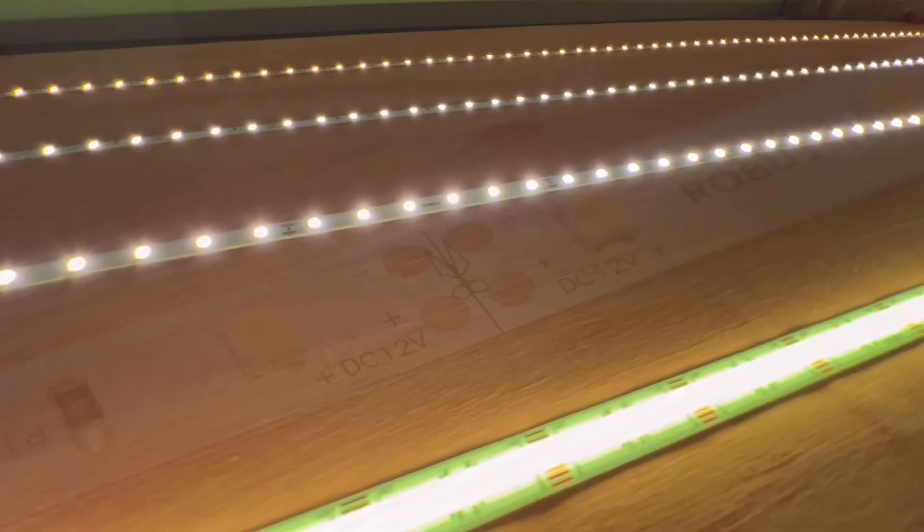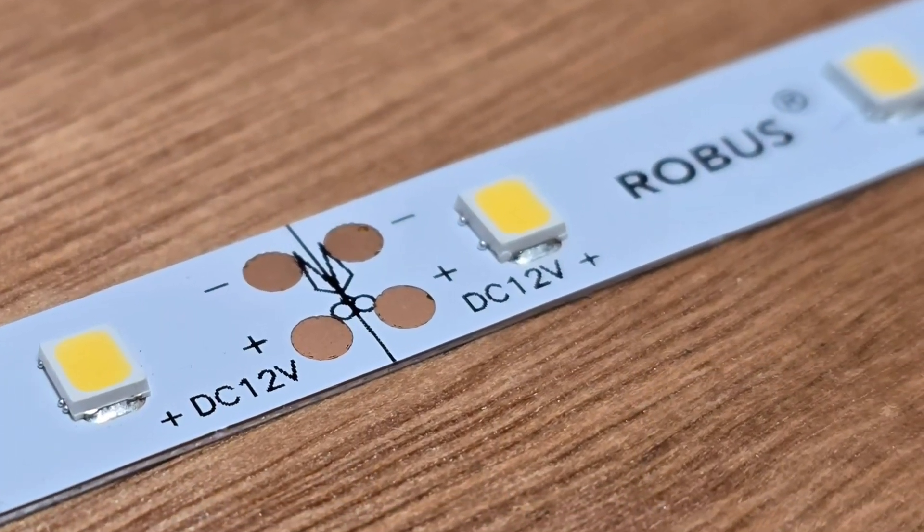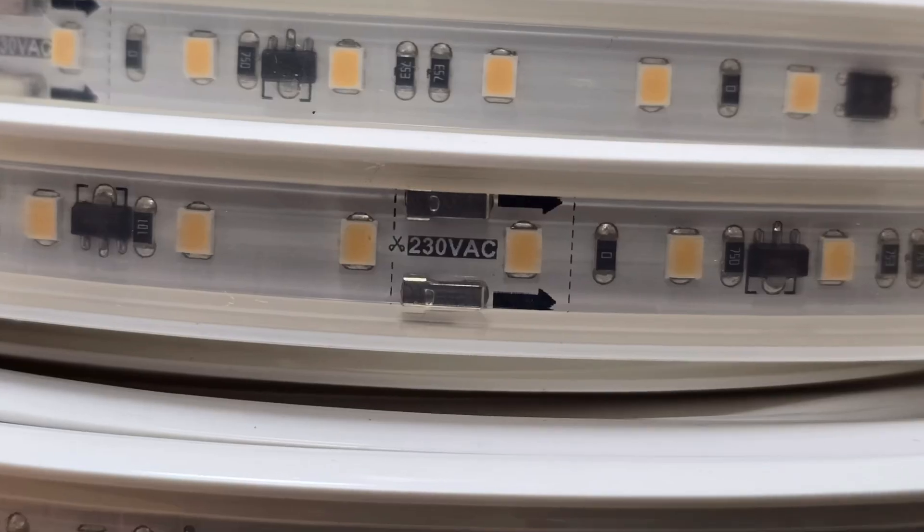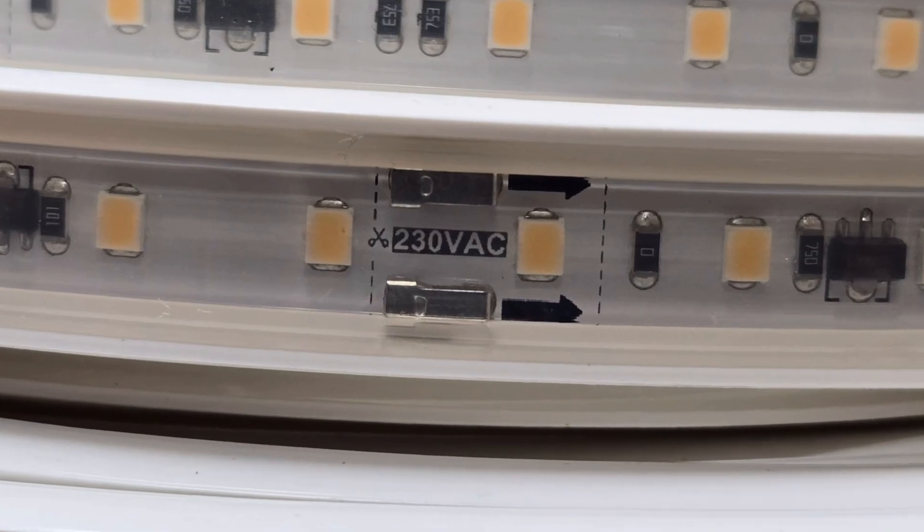Starting with the simplest, which is the 12 volt Vega strip. It's also available in 24 volts and there's even such a thing as mains voltage AC strip, but more on those in future content.